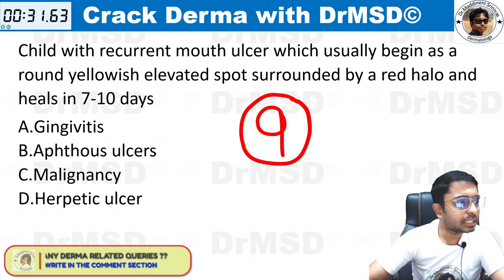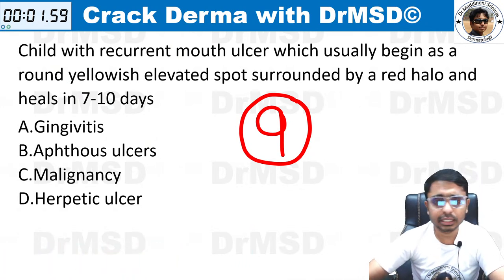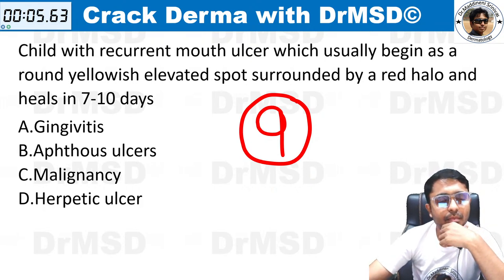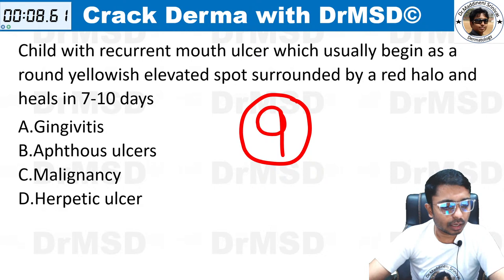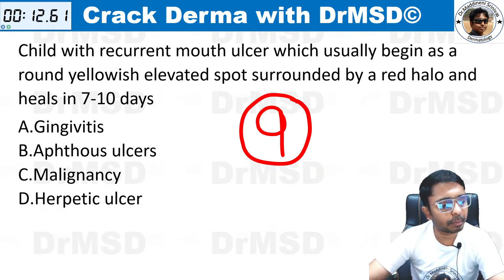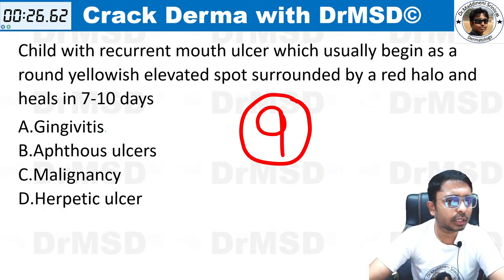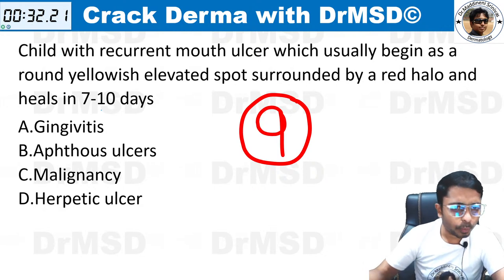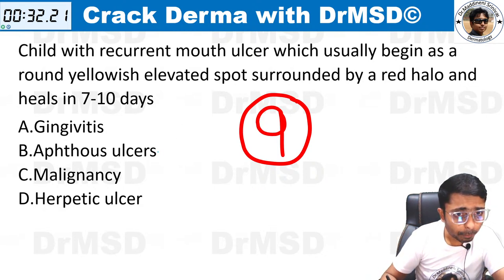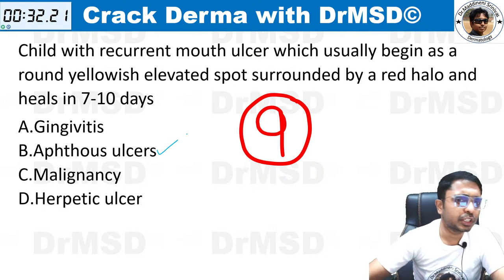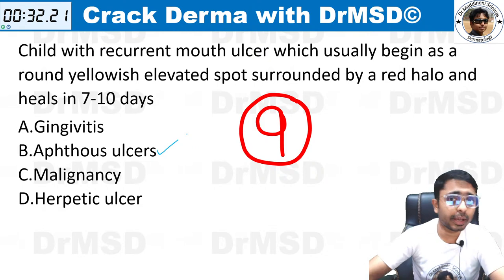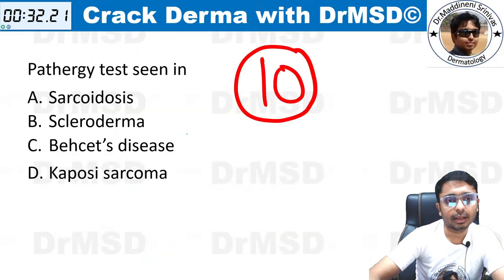Question number nine — please guess the answer. These clinical-based questions may be seen in the real exam also, so you should be practicing slightly lengthy questions while doing your grand test. The answer is option B — that is aphthous ulcers. Please remember this; it is very important.